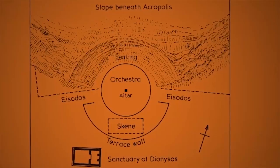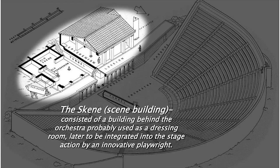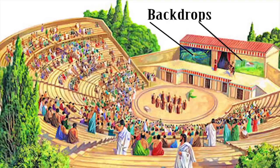Behind the orchestra circle was a large rectangular building called the skene, meaning tent, because originally it was just a tent put up during the festival. It was used as the actors' changing room. Later, the skenes became permanent buildings and often had backdrops painted on them, giving us the word scenery.